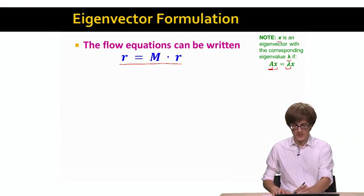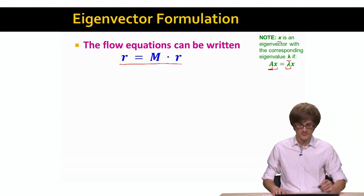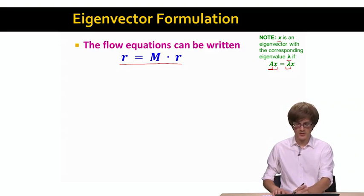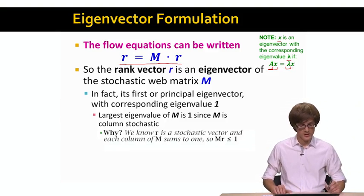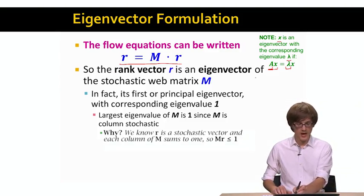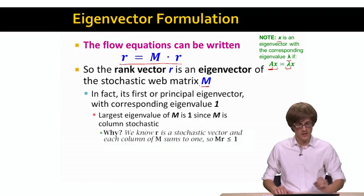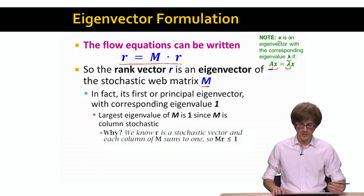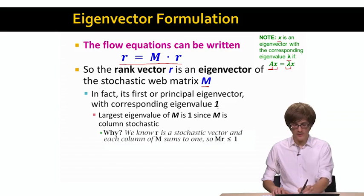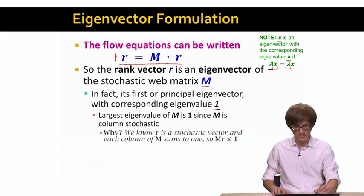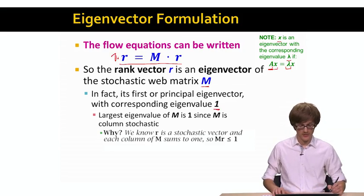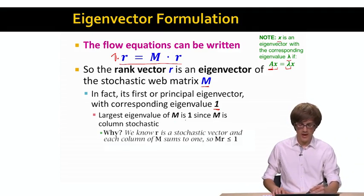The point is that x is an eigenvector, lambda is an eigenvalue, if they are solution to this equation A x equals lambda x. In our equation, it looks very similar. We have M times R, which is the same as A times x. And then we say equals R, and before we had equals lambda x. So what this means is that rank vector is an eigenvector of the stochastic web matrix M. Another important fact is that it is a principal eigenvector, which means that it corresponds to the eigenvalue with value 1. Here I can think that I implicitly multiply by 1, and my lambda is 1. In fact, the largest eigenvalue of M is 1 exactly because M is column stochastic.